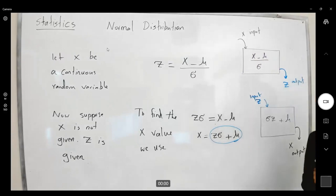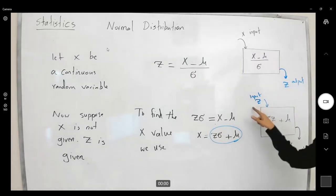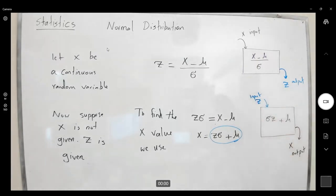So I give you two formulas, two machines that you can use to either find your z, or if z is given, you can find your x-value. Let's take a look at the examples. Let's ask a volunteer from group 3 to read the example for us.